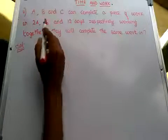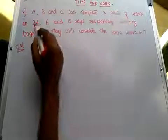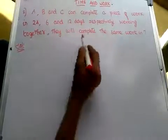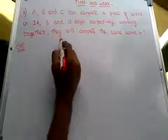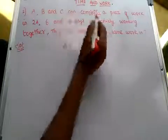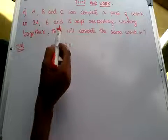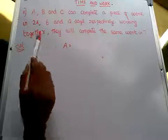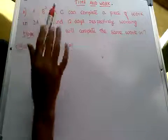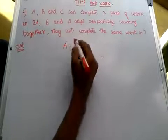Our next problem: A, B and C can complete a piece of work in 24, 6 and 12 days respectively. Working together, they will complete the same work in how many days? This is the same problem — the only difference is that C is added. In the previous problem we had 2 workers; here we have 3. The concept is the same.